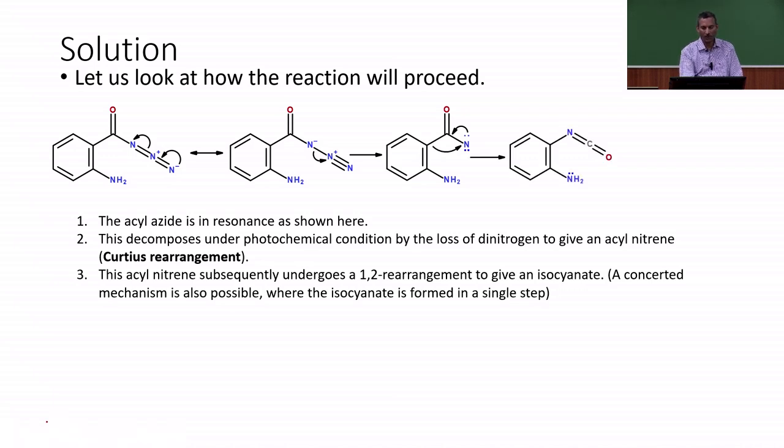This acyl nitrene subsequently undergoes a 1,2 shift to give isocyanate. This overall conversion is basically called the Curtius rearrangement. A concerted mechanism is also possible for this where the isocyanate is formed in a single step without showing the acyl nitrene intermediate.